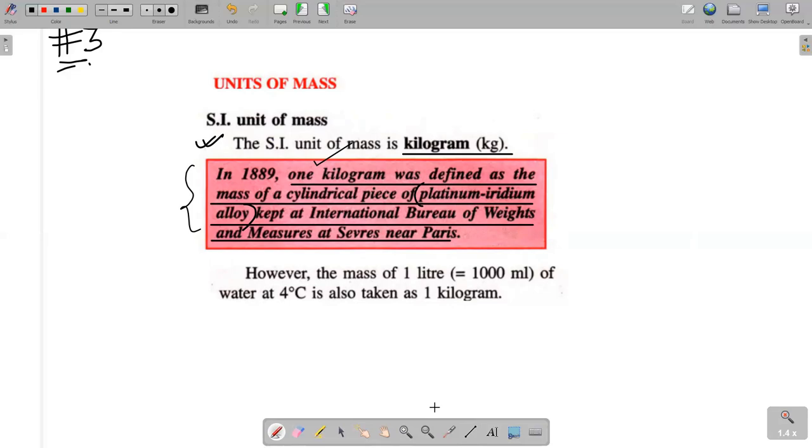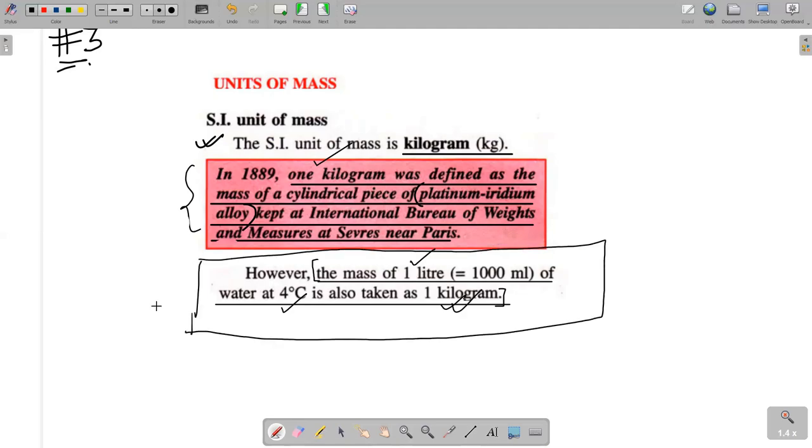One kilogram ka agar definition hai. What is it? The mass of one liter, yani one thousand ml of water at four degrees celsius is also taken as one kilogram. Toh one kilogram, us mass ko bhi bolte hai, jo one liter of water ka hota hai at four degrees celsius. Yani, humne liya pure water, kitna liya one liter pure water liya, yani one thousand ml pure water liya, or us water ka four degrees celsius mein, jitna bhi mass hota hai, that is one kilogram. And that is exactly equal to the mass of the cylindrical piece also. Agar definition school mein, poochhe exam mein, poochhe define one kilogram, toh tummeh yeh joh pink box mein likhawa hai, yeh hi likhna.